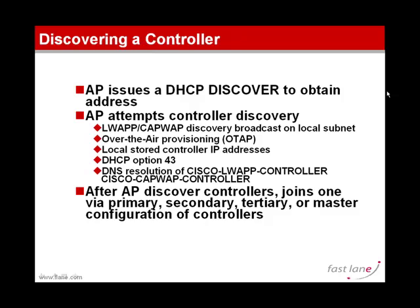Once an access point boots and gets an IP address, it discovers controllers. It has a few ways of doing that. One of the ways is to send a discovery message to the broadcast IP address of the local subnet in which the access point got its IP address.